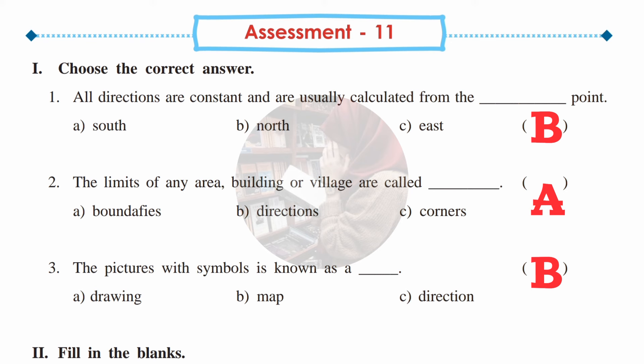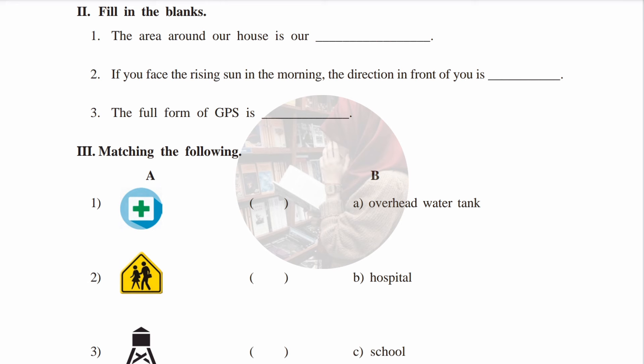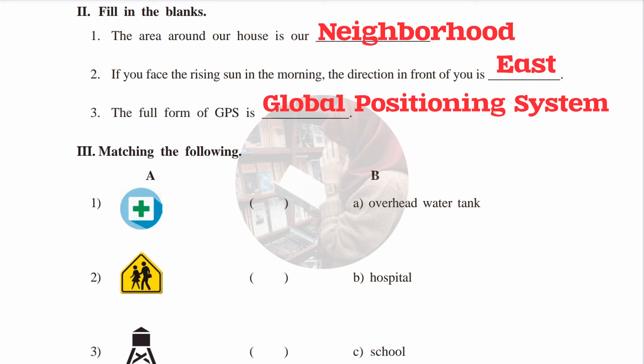Third question: the picture with symbols is known as a map. Second section, fill in the blanks: The area around our house is our neighborhood. If you face the rising sun in the morning, the direction in front of you is east. The full form of GPS is Global Positioning System.